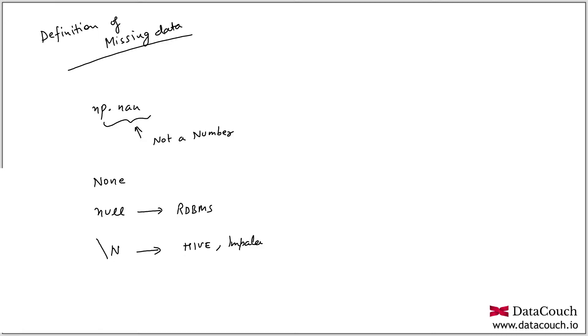So we do one thing - we impute the data. For imputing missing data, we have various strategies.